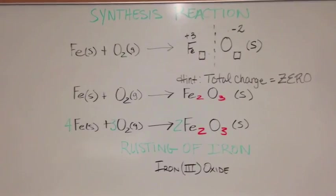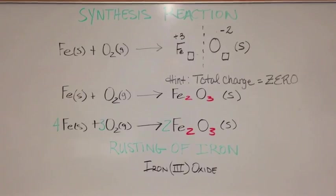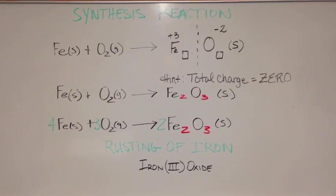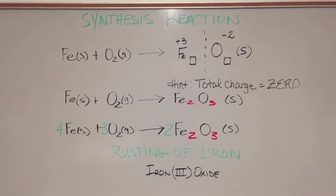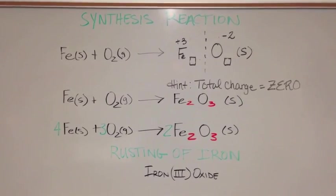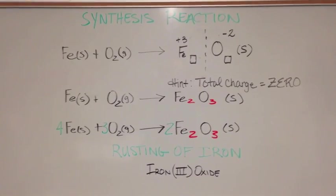Just in case your chemistry is a little rusty, as you saw in the video, a very common synthesis reaction is the rusting of iron. The rusting of iron takes place when the element Fe combines with Oxygen to form Iron(III) Oxide.